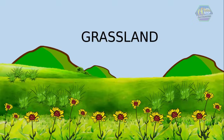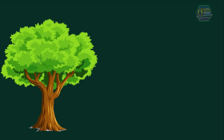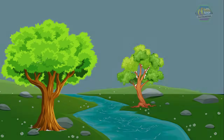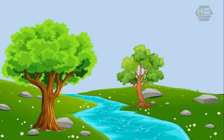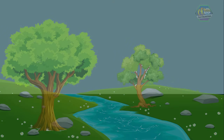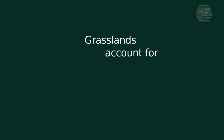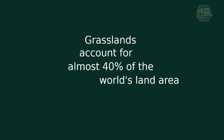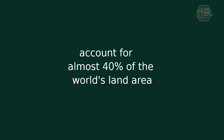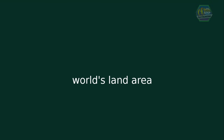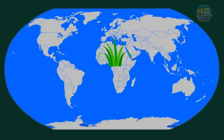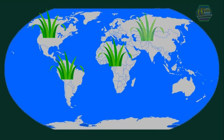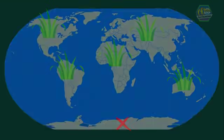Trees only grow near rivers or where there is lots of rain. Fun fact, learners — did you know that grasslands account for almost 40 percent of the world's land area, and they exist in every continent except Antarctica?